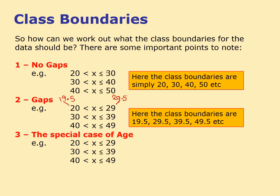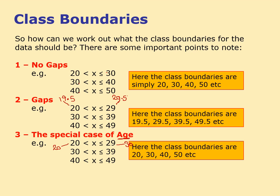Now consider age data showing 20 to 29. This is different because of how age works: if someone describes themselves as 29 years old, they could be 29 and a half — their birthday could be tomorrow and they'd still say they're 29. So we consider someone who says their age is 29 to be anything up to 30. Someone who says their age is 20, we take as exactly 20. For this reason, the age class boundaries work the same as the first case: 20, 30, 40, 50, where someone aged 30 to 39 could range from 30 up to 40.